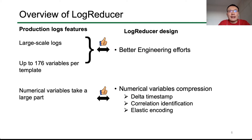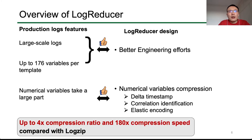To address these issues, we designed and implemented Log Reducer by matching those log features. In general, we have two major design considerations. First, we found some problems can be addressed by better engineering efforts, which can improve the latest parser-based method and fully realize its potential. Second, we applied three techniques to compress numerical variables: delta time steps, correlation identification, and elastic encoding. According to our evaluation, Log Reducer can compress production logs with a satisfying compression ratio and speed.